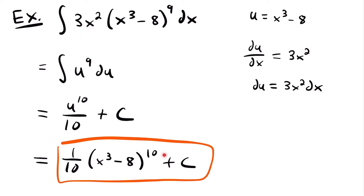If you're not sure this is the right answer, you can always take the derivative of your answer. If that derivative matches what's in your integral, you know your answer is correct. Just remember that the derivative of this function will require the chain rule, because you have a composite function. Taking the derivative and checking your work would be very helpful to do on a quiz or an exam.